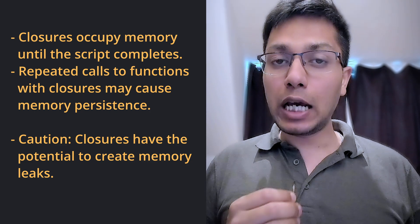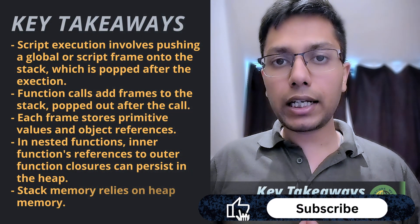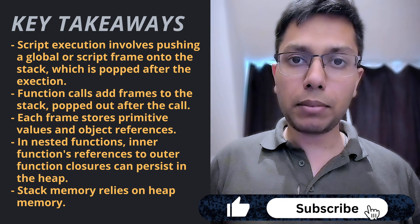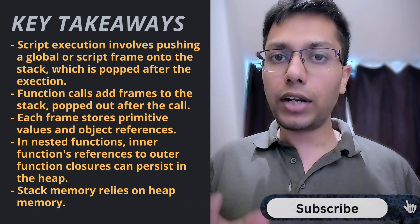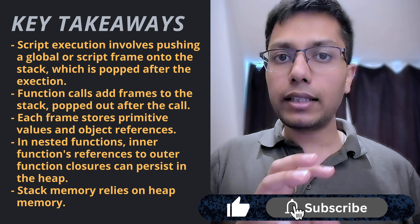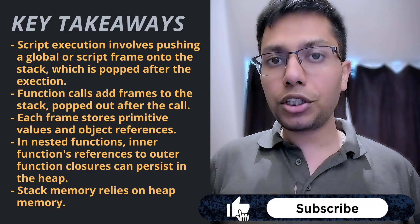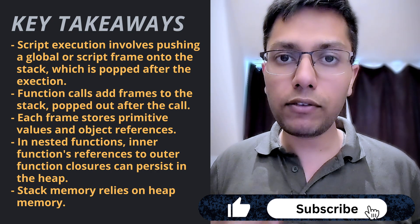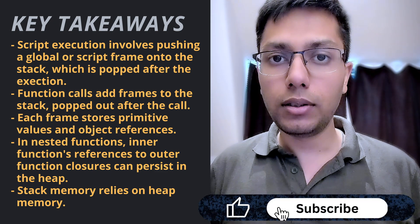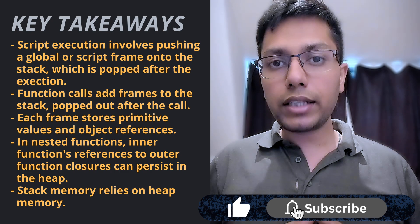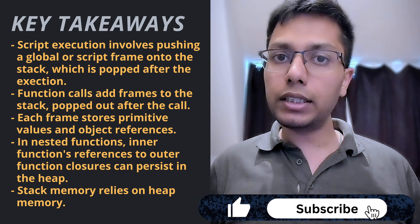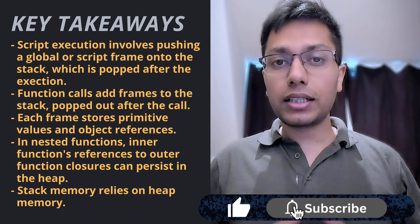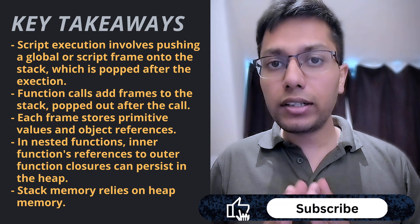Be careful with closures — they have the potential to create memory leaks. The key takeaways: when a script is executed, a global frame is pushed into the stack memory, and for every function call, a dedicated frame is pushed. When the function call is complete, that frame is popped out of the stack. When the script finishes executing, the last frame is also popped. Each stack frame stores local variable data and references to outer function closures — these can be primitive values or object references. In case of nested functions, if there is a reference to an inner function in the stack memory, the corresponding closures of the outer functions persist in the memory heap. The stack memory cannot operate without the heap memory, which we will discuss next.